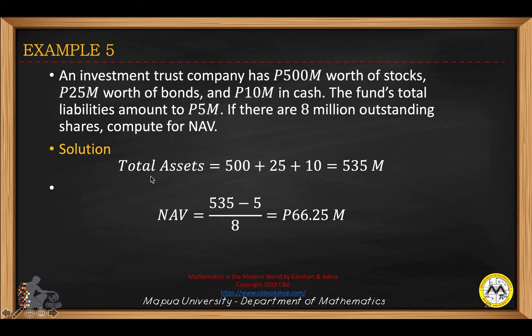Let us compute the total assets. The total assets will come from the worth of stocks, which is $500 million, the bonds, which is $25 million, and $10 million in cash, giving a total of $535 million.